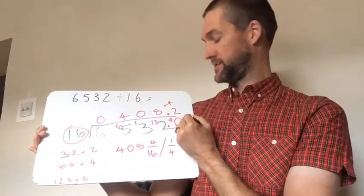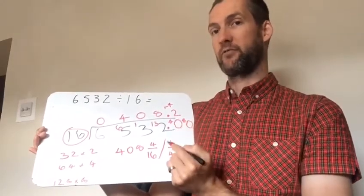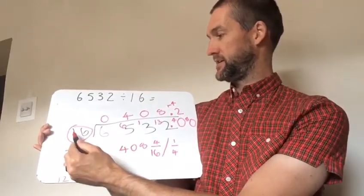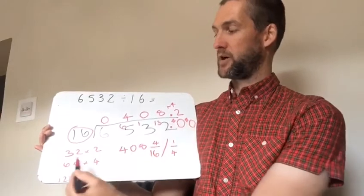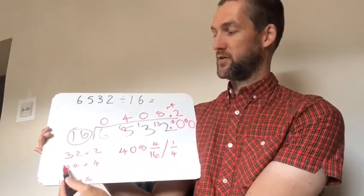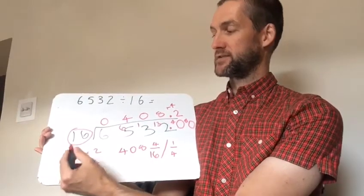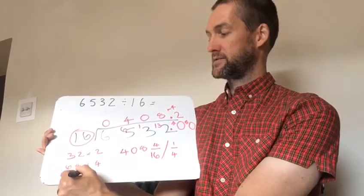Again we need to put a place value holder in here. Because we're now dealing with the hundredths. How many times does 16 go into 80? Well we know that 4 lots of 16 are 64. If I add another 16 onto 64 I get to 80.